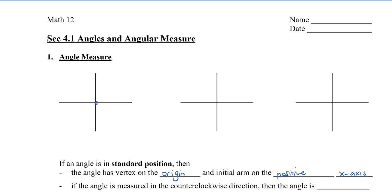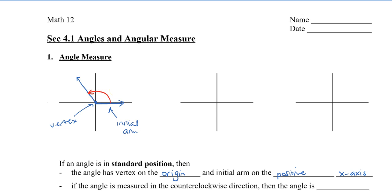On this diagram, the vertex would be located right here at the origin, and then the initial arm would start here where the positive x-axis is. Since we're creating an angle, let's say that the angle was this angle here. We always start angles measured from the initial arm and then we rotate. If the rotation is counterclockwise, then the angle is set to be positive. Now, where the angle ends, this arm is called the terminal arm.